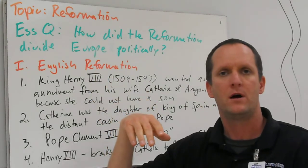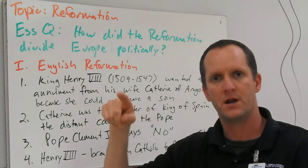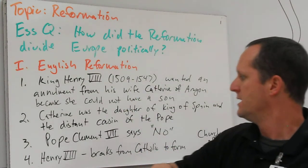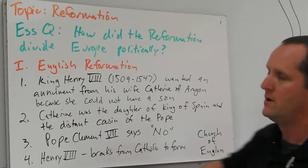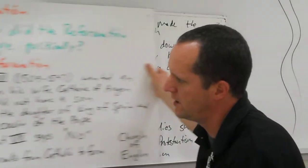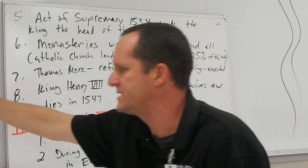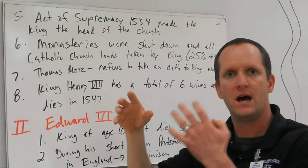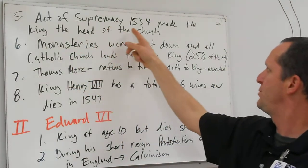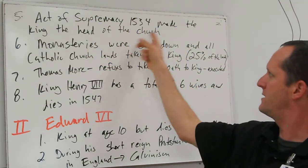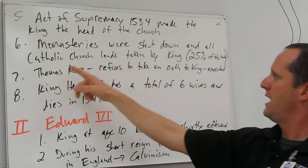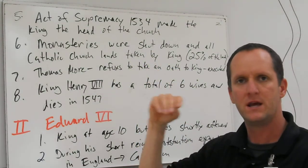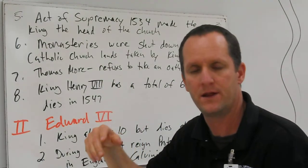King Henry VIII did not like that answer, so he started to take on some of the Protestant views and decided to split from the Catholic Church. King Henry VIII breaks from the Catholics to form the Church of England. The Church of England still believed in many of the tenets of the Catholic Church, but the big difference is that the King of England is now in charge of the Church. The Act of Supremacy in 1534 made the King the head of the Church. Monasteries were shut down and all Catholic Church lands were taken by the King — about 25 percent of the lands in present-day England — so that was a lot of land and thus a lot of money.